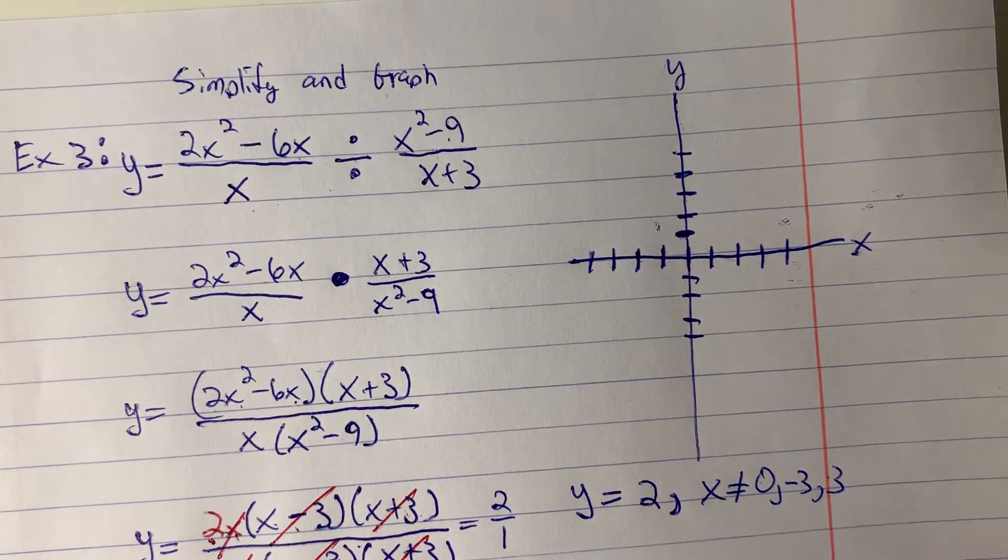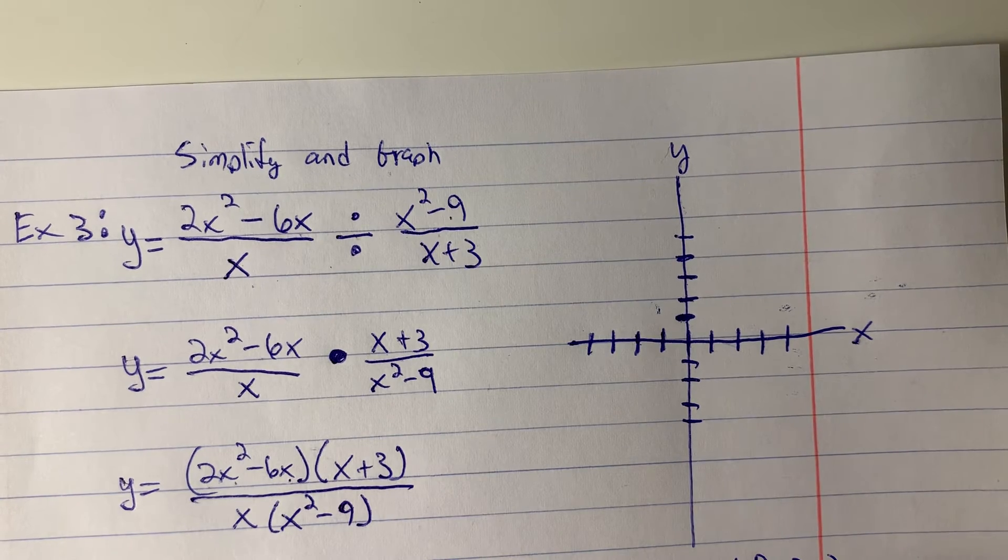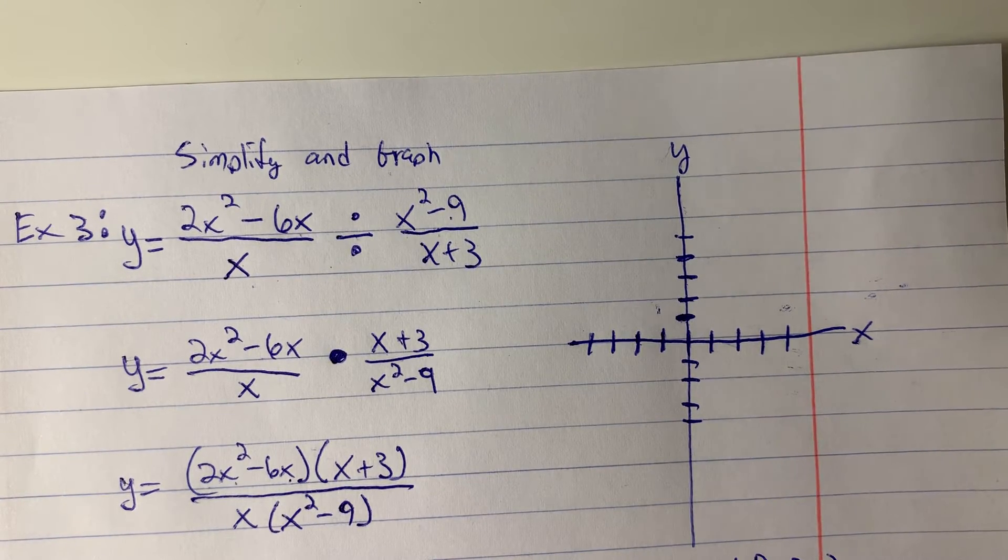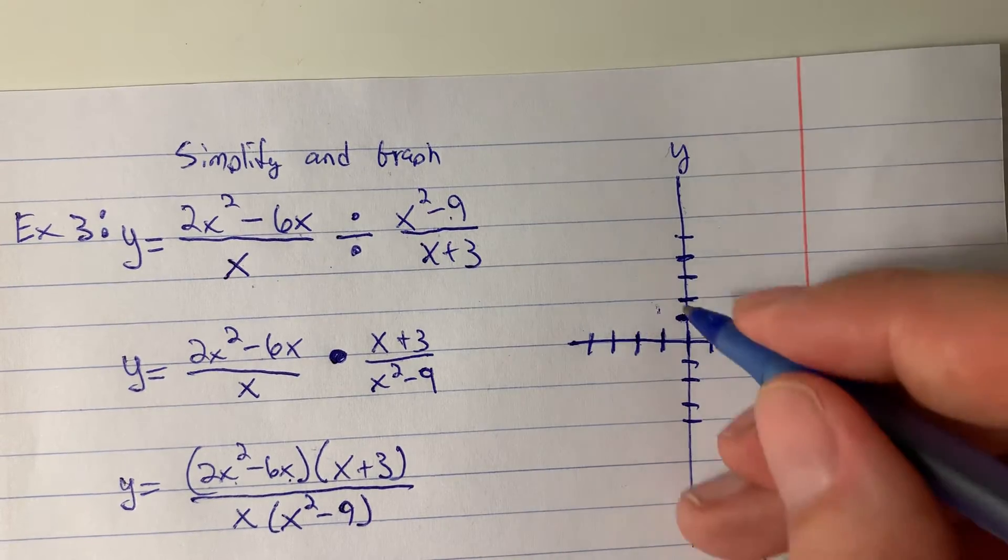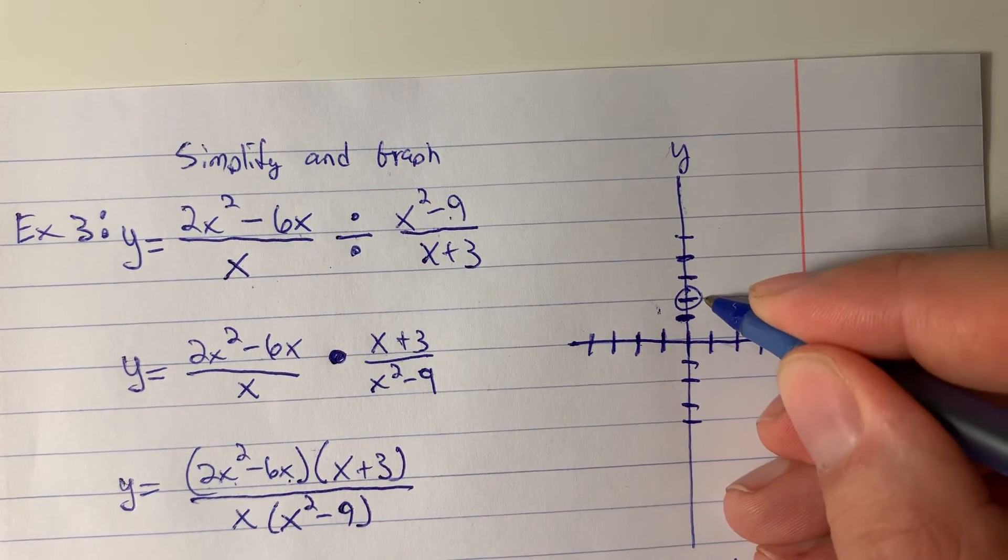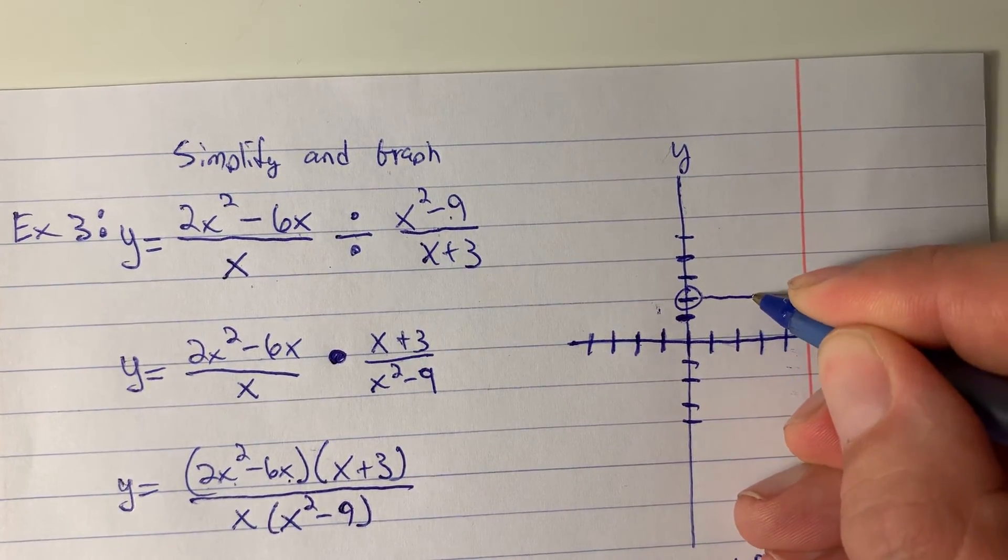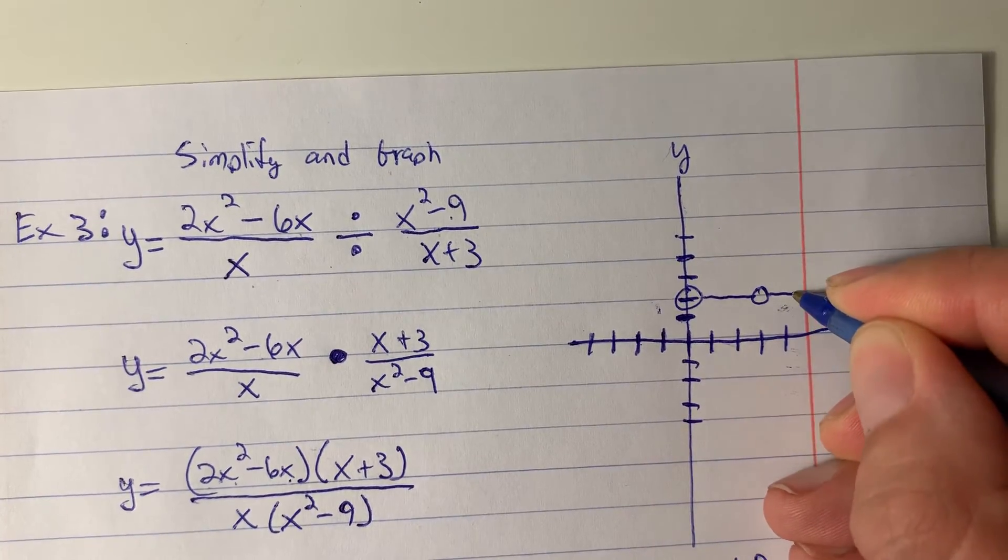And so we end up with this graph of y equals 2, which is a horizontal line, except at x equals 0, x equals negative 3, and x equals 3, there is no value. So we use a blank circle there. It's a hole or a removable discontinuity.